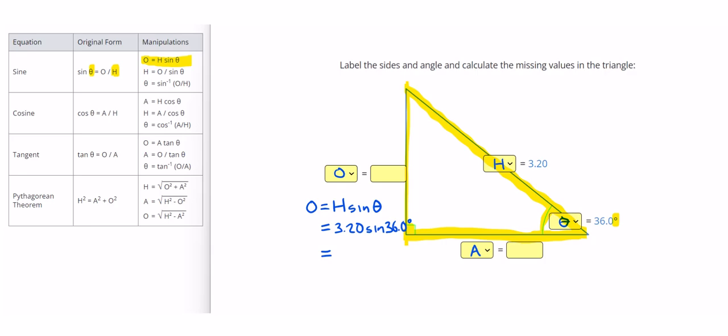If I plug that into my calculator and make sure that I'm in degree mode, I get a side length of 1.88. And I can write that down for O. I feel good about that because it's smaller than my hypotenuse H.